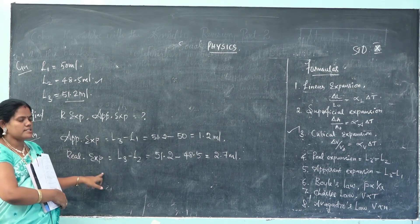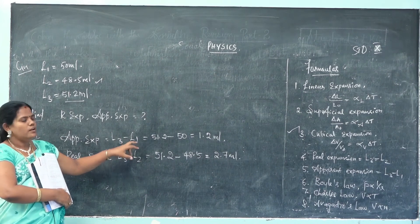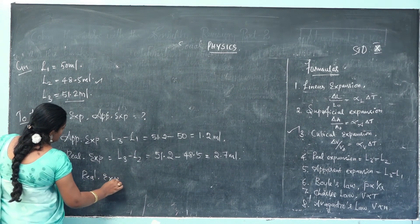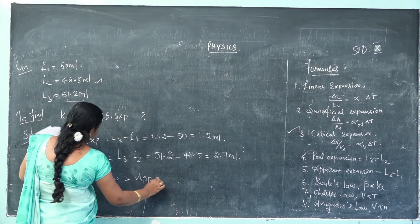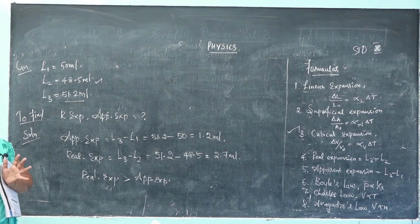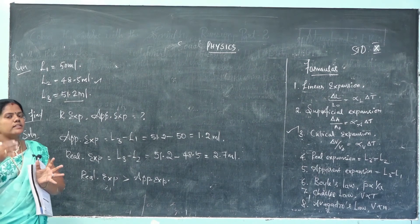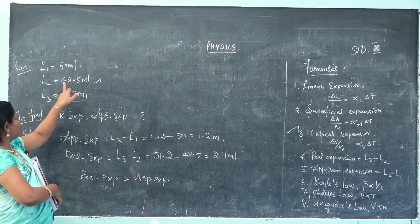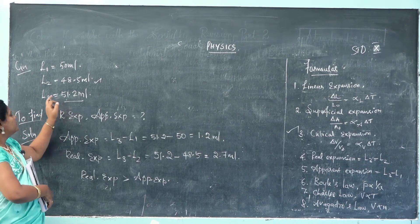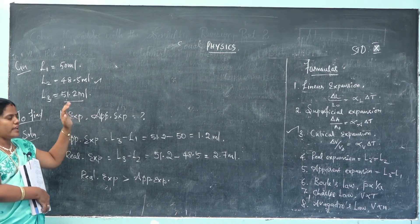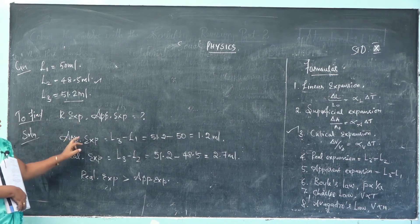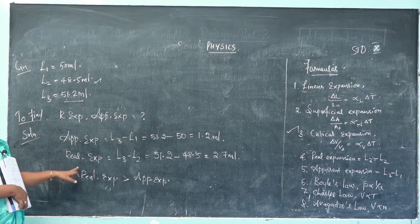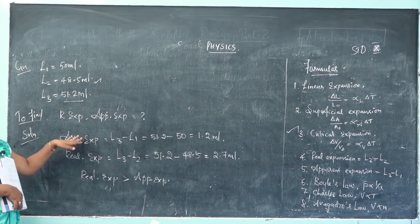Comparing the two values — 1.2 ml and 2.7 ml — the real expansion at 2.7 ml is greater than the apparent expansion of 1.2 ml. We can conclude that real expansion is always greater than apparent expansion. The container had capacity 70 ml, was filled to 50 ml, level dropped to 48.5 on initial heating, then rose to 51.2 ml, and using the two formulas both expansions were calculated.